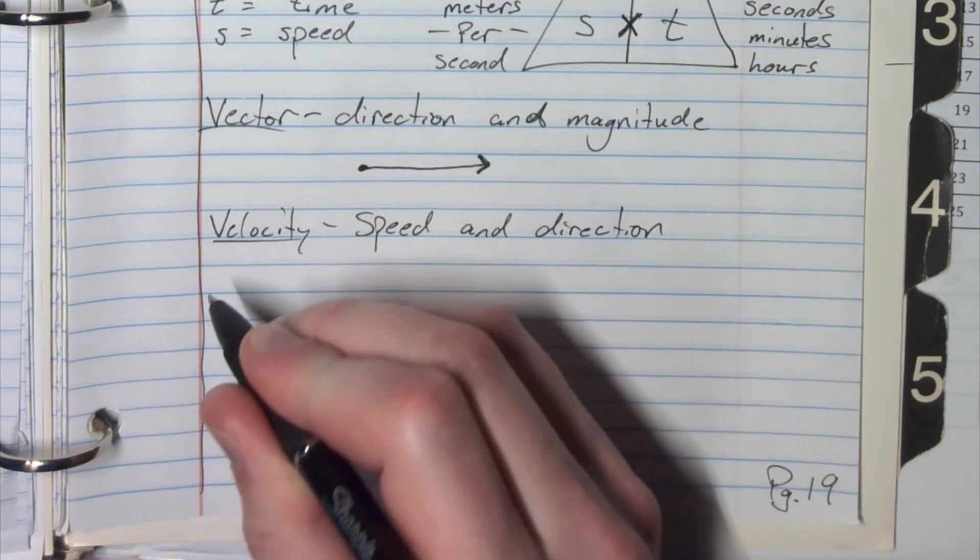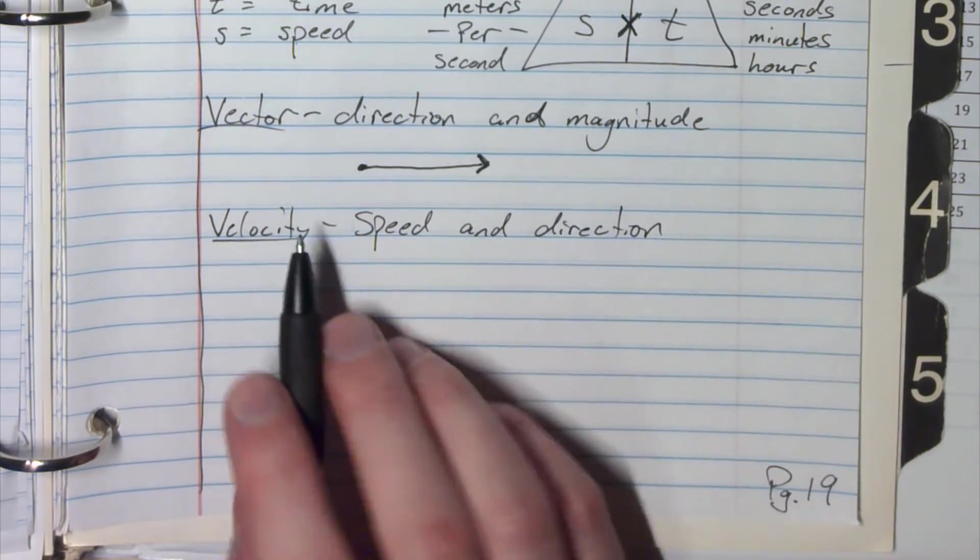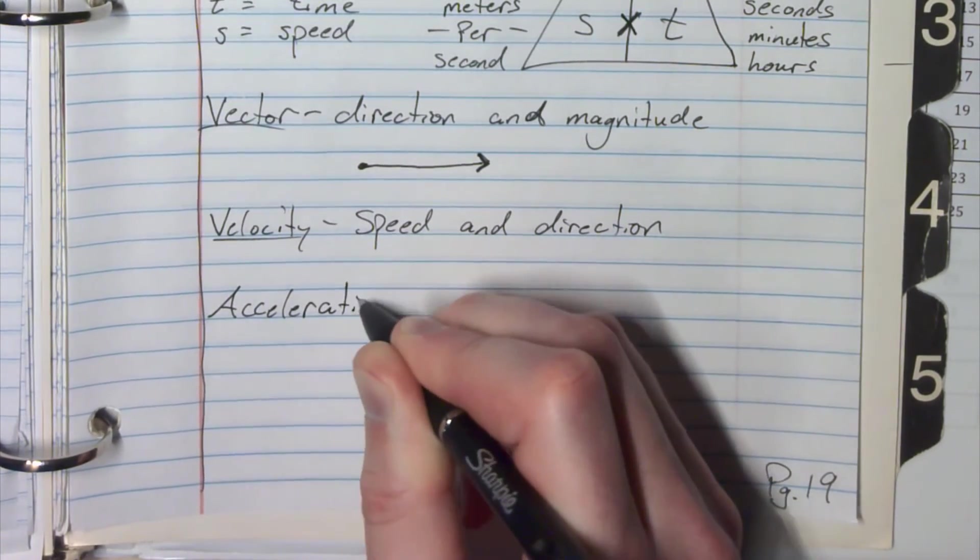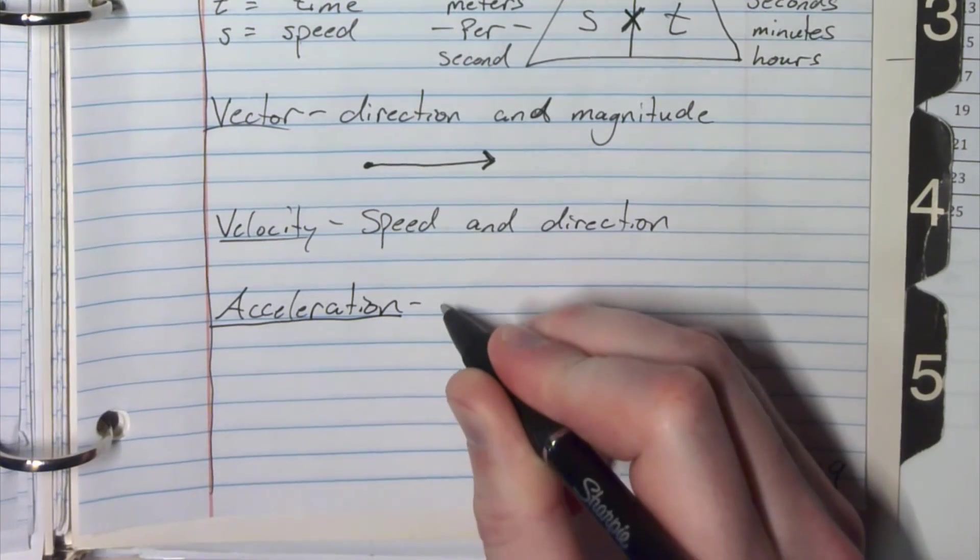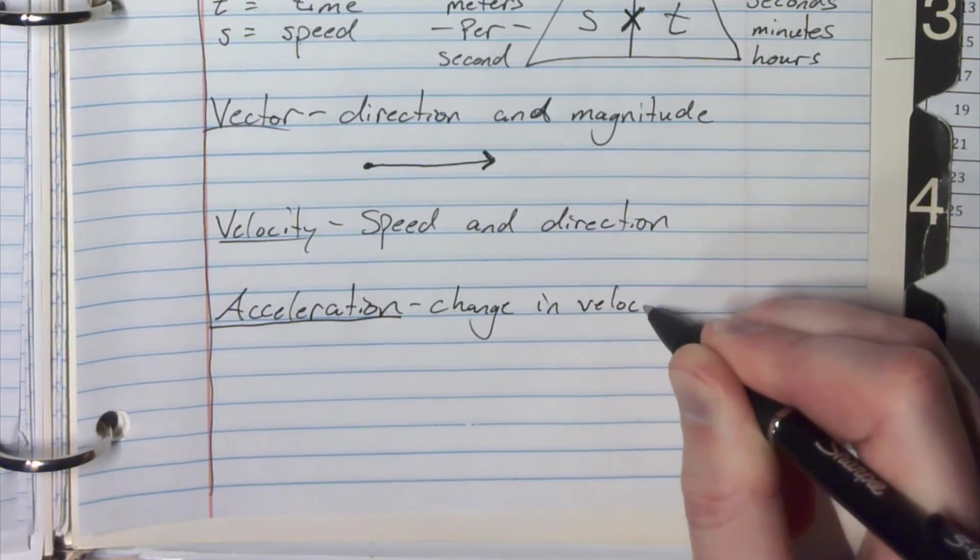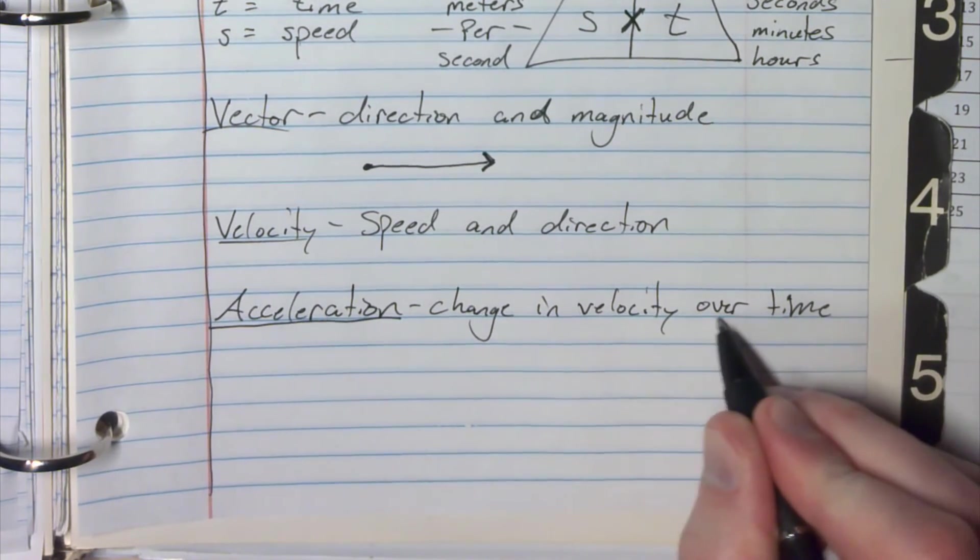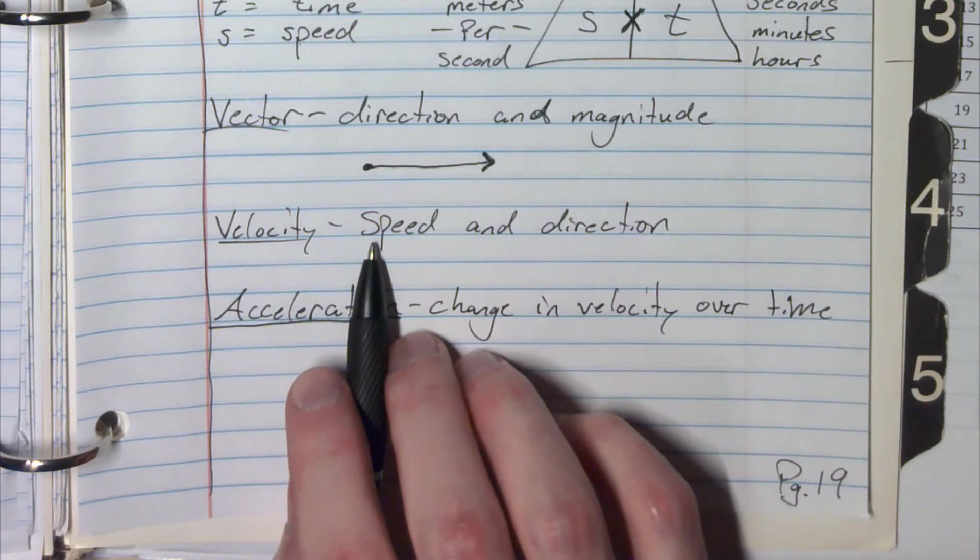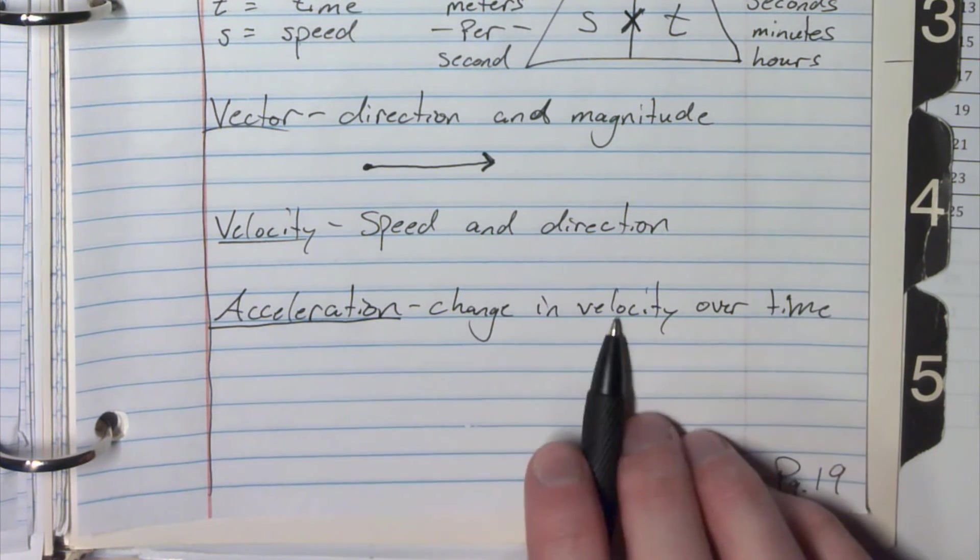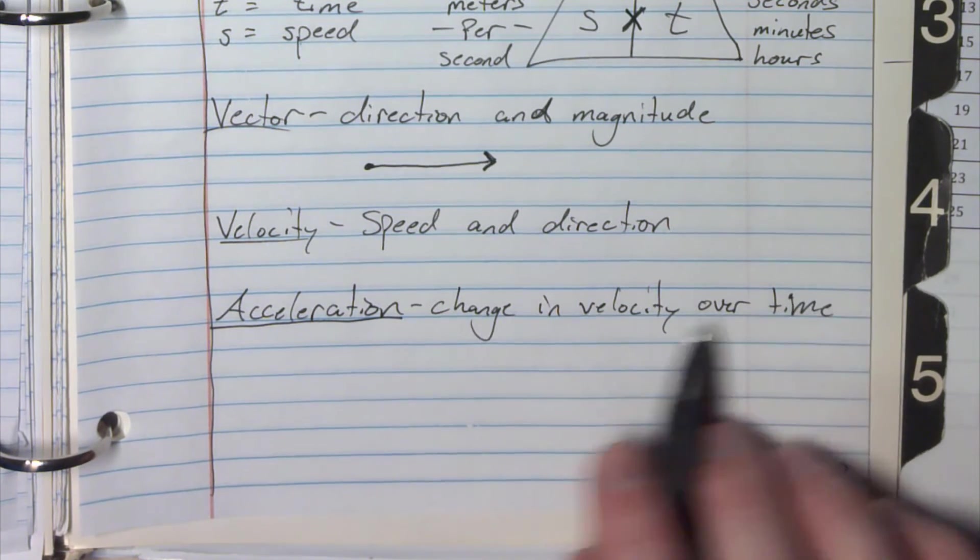And then if we're going the same speed the whole time, then it's velocity. But if I change my velocity, then it's acceleration. So it's a change in velocity over time. So again I've got this 'over,' that means I'm dividing. So if I'm going 0 miles an hour and then I go up to 60 miles an hour, well that's my change in velocity. But how long did it take? Did it take me 10 seconds? Well then I would divide that and that would be my acceleration.